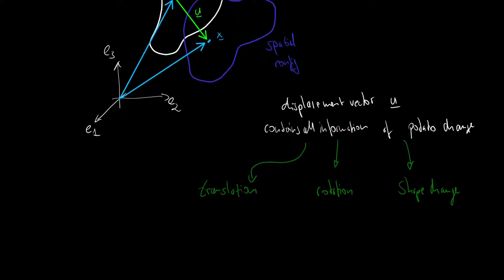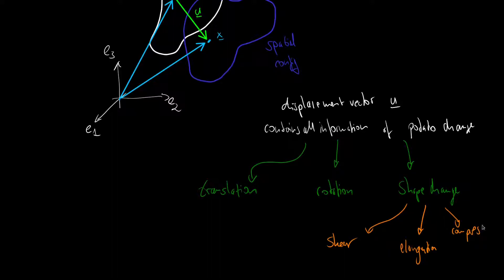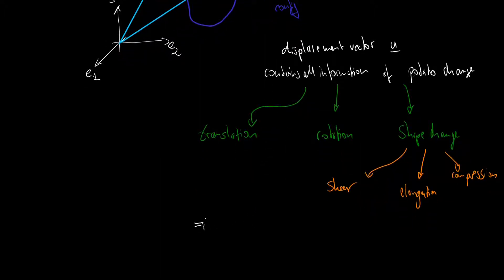The problem is that all this information is contained in the displacement vector, but it's not easy to extract it, especially since there are multiple modes of shape change. There could be shear, elongation, or compression — all these things are hidden in the u vector. In order to extract them, we have to access this more deeply, and that is where the displacement gradient comes in.